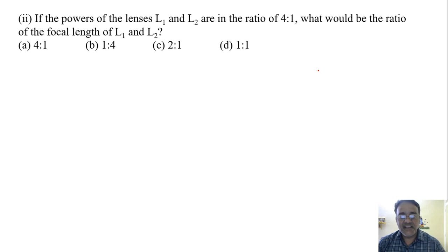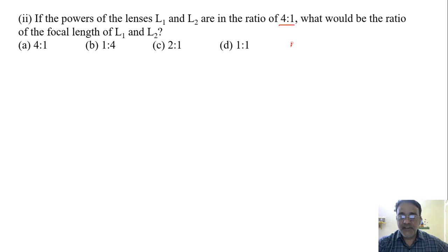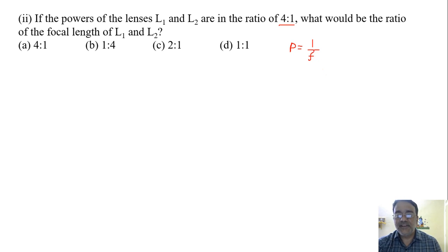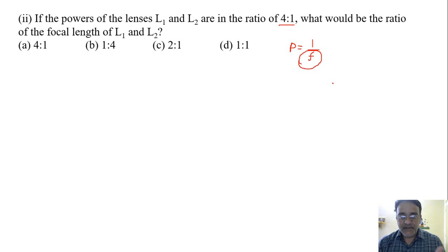The second question: if the powers of lenses L1 and L2 are in the ratio 4:1, what would be the ratio of the focal lengths of L1 and L2? We have the formula P = 1/f, where P is power with unit diopter, and f is focal length with unit in meters.